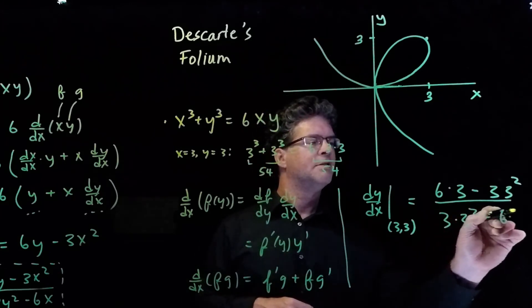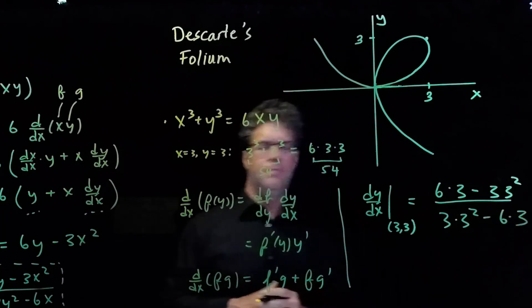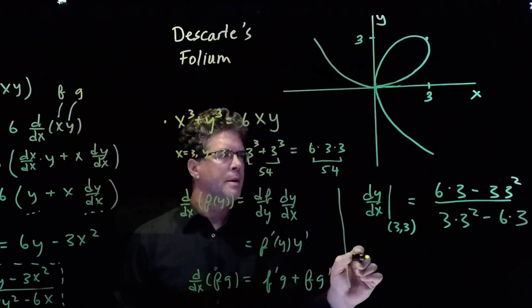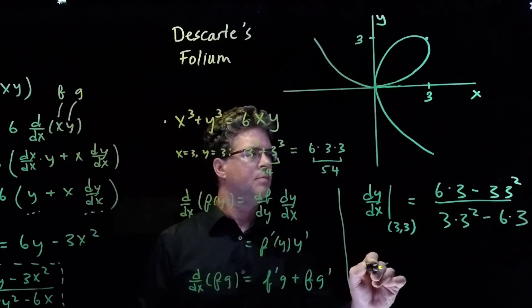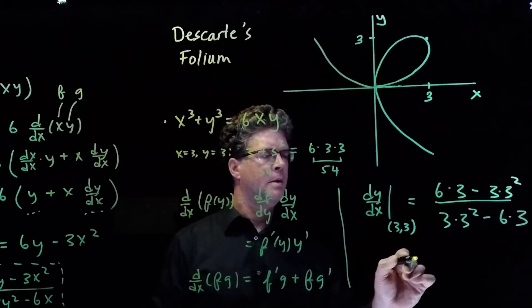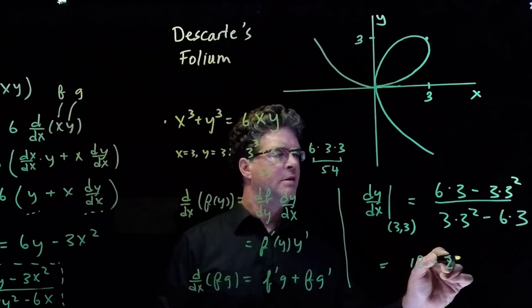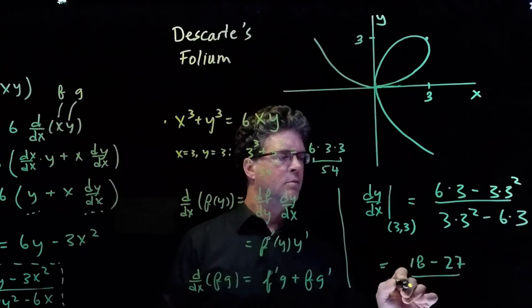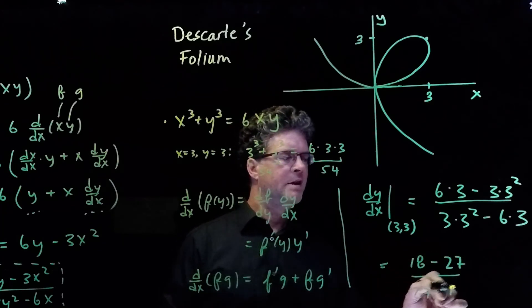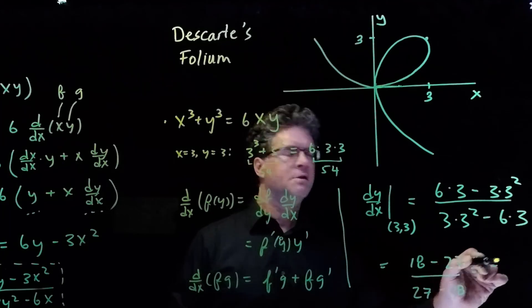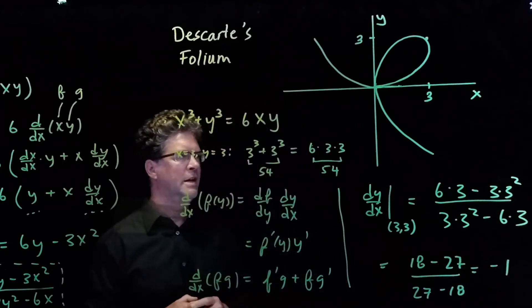And so this is equal to 18 minus 27 over 27 minus 18, which is equal to minus 1. That's quite handy.